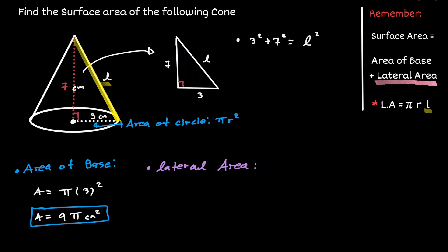With this, we can find that it's going to give us 9 plus 49 equivalent to L squared. So now we can say that L squared is equivalent to 58, and when we take the square root, L is equivalent to the square root of 58, which is approximately 7.61.